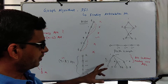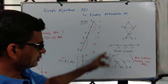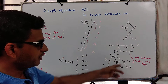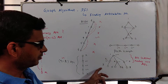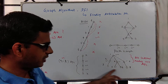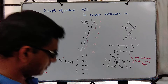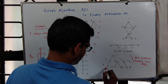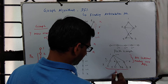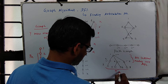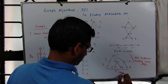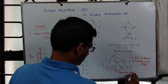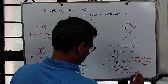A path is a special case of a tree. For trees, all internal nodes are articulation points and all leaf nodes are non-articulation points — leaves are not APs, they are not cut vertices.